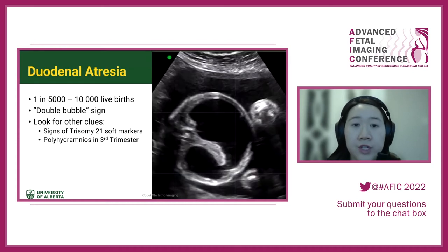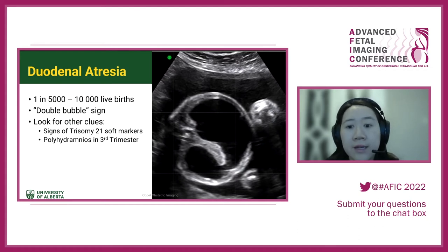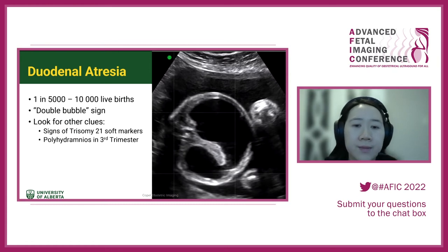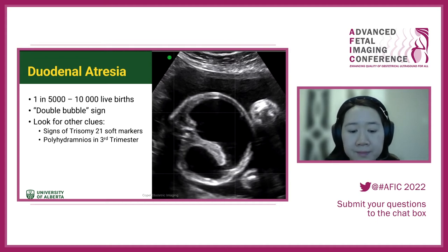Duodenal atresia — most of you are probably more familiar with this one. The classic double bubble sign: we're looking for a dilated stomach that tapers through a small region where the pylorus is expected, and then a second area of enlarged hypolucency — that's your duodenum.